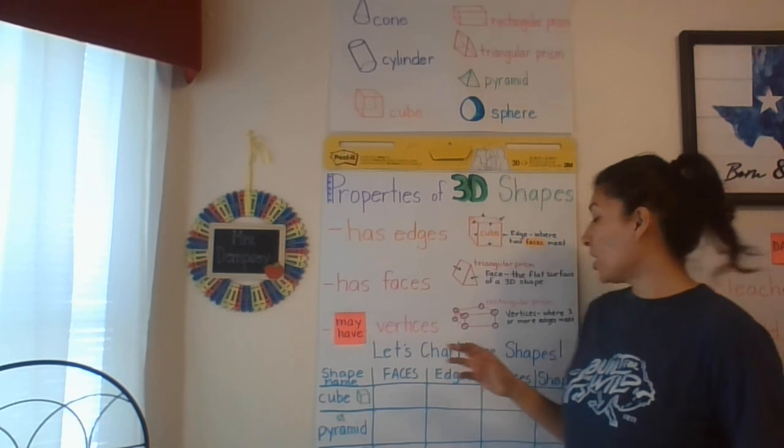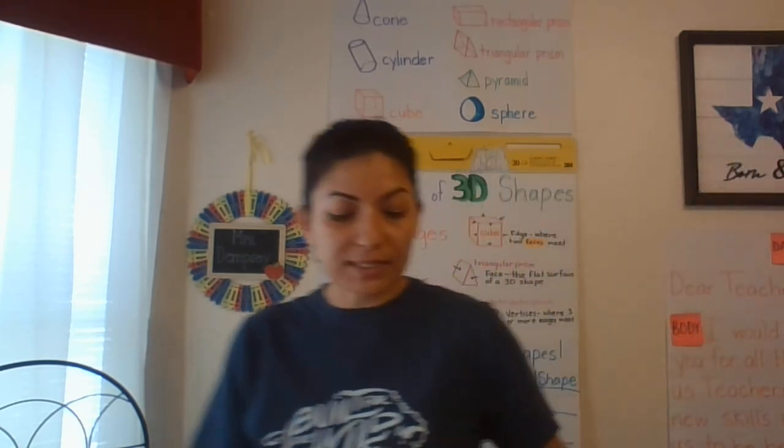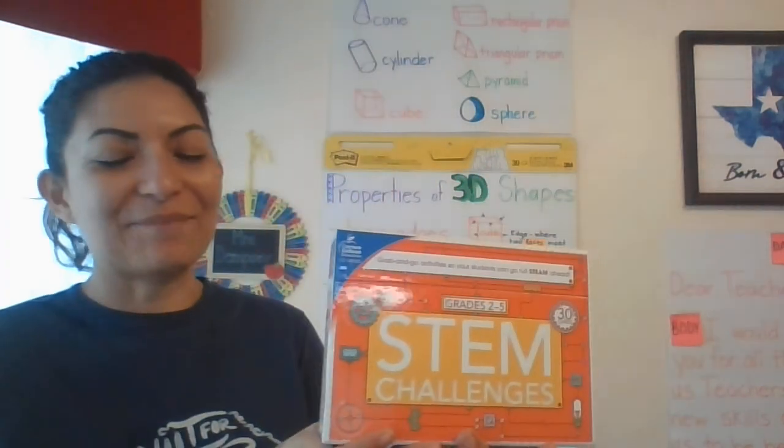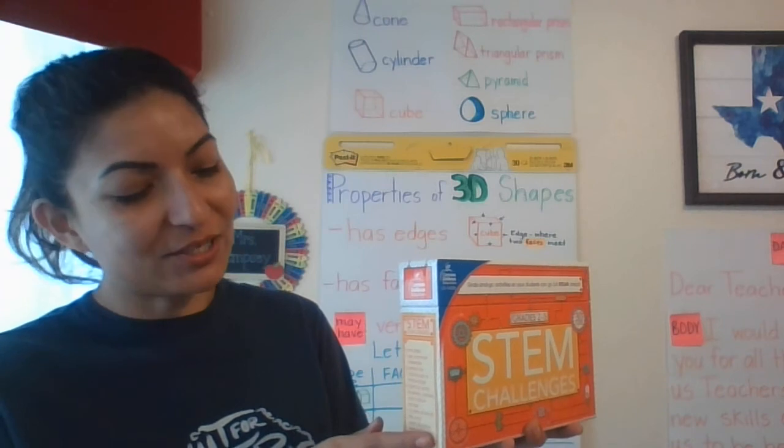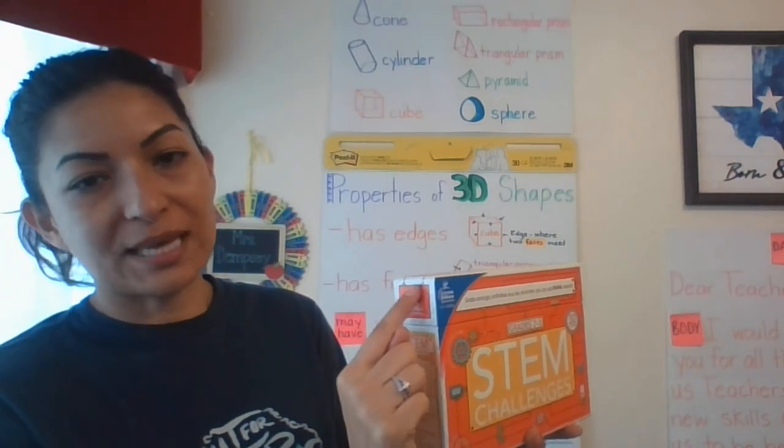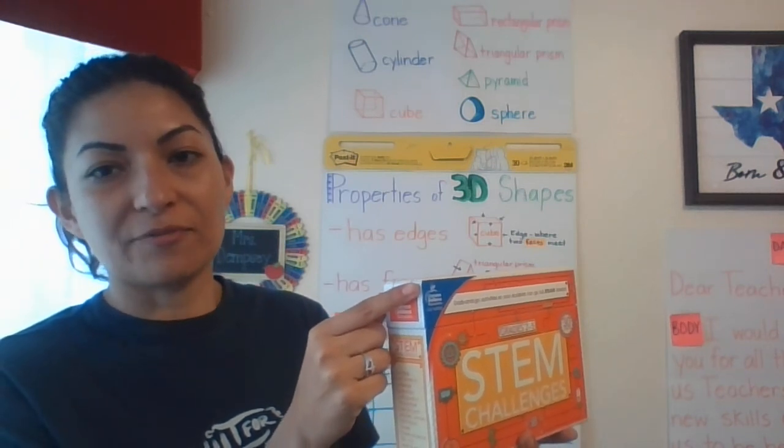So what are vertices? Vertices are where three or more edges meet. So for instance, going back to that 3D shape, have you guessed what it is? If you have it, it's a rectangular prism. So if we're looking at those three edges, here's one, here's another, and here's that third one. Where those three edges meet would be considered the vertices.